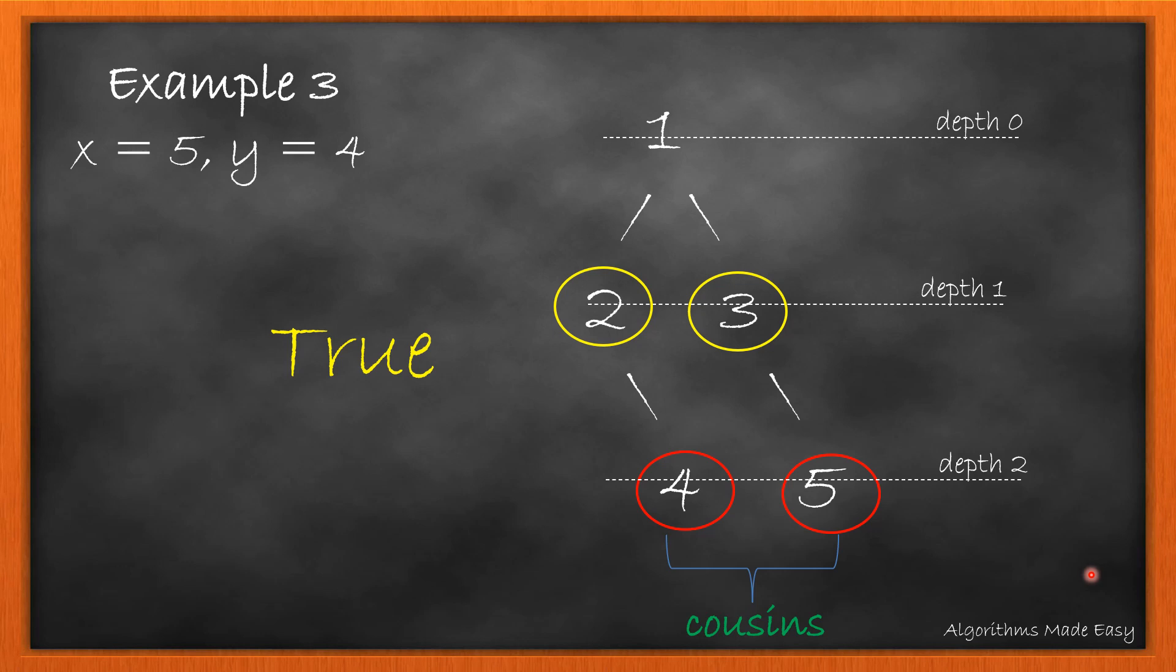In example 3, both the conditions are satisfied, i.e. the depths are equal and the parents are different so we return true.